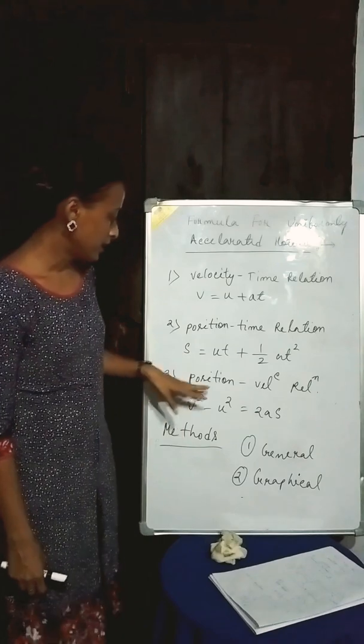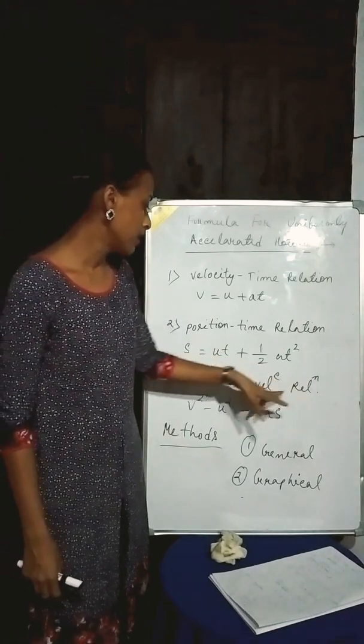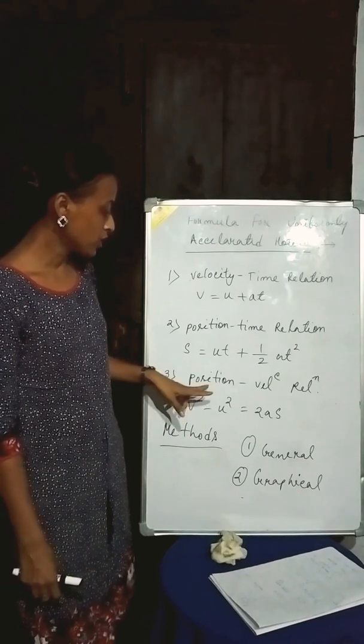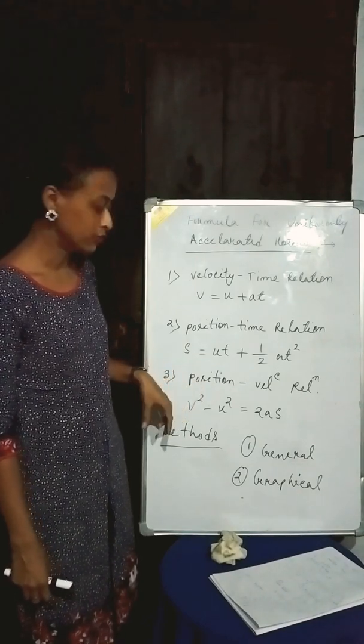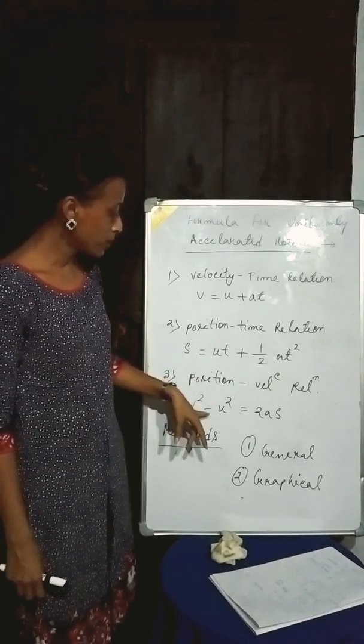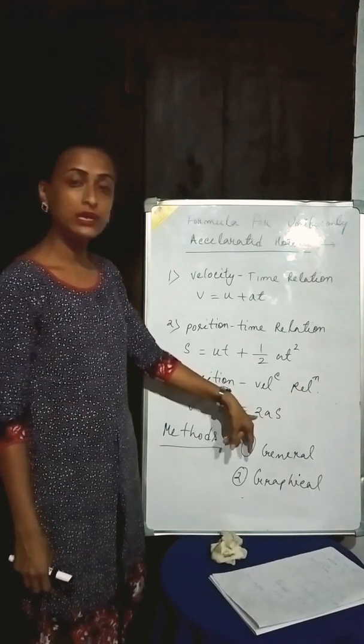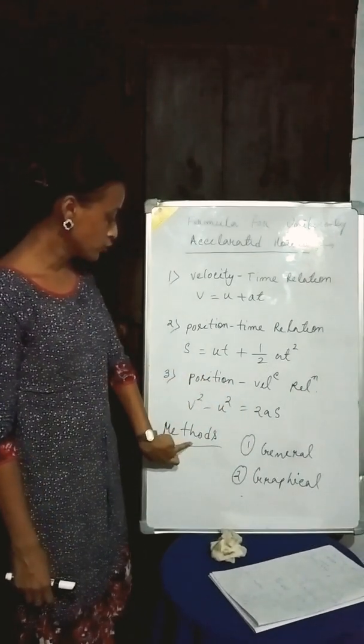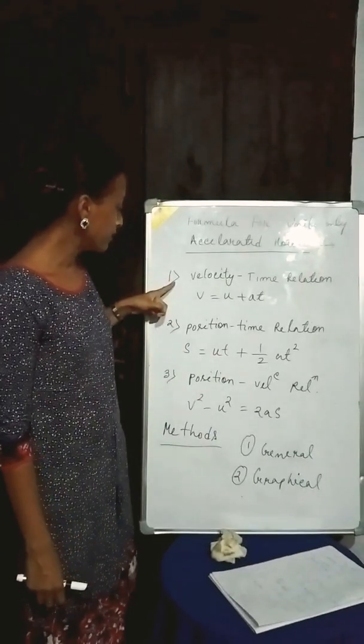And third one is position-velocity relation, and mathematical expression of the position-velocity relation is V squared minus U squared equals twice AS. Now there are two methods in order to derive these three formulas.